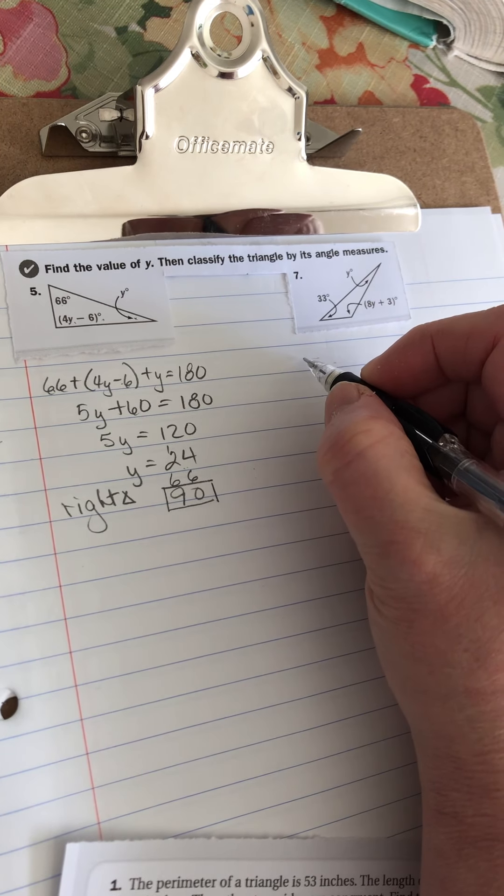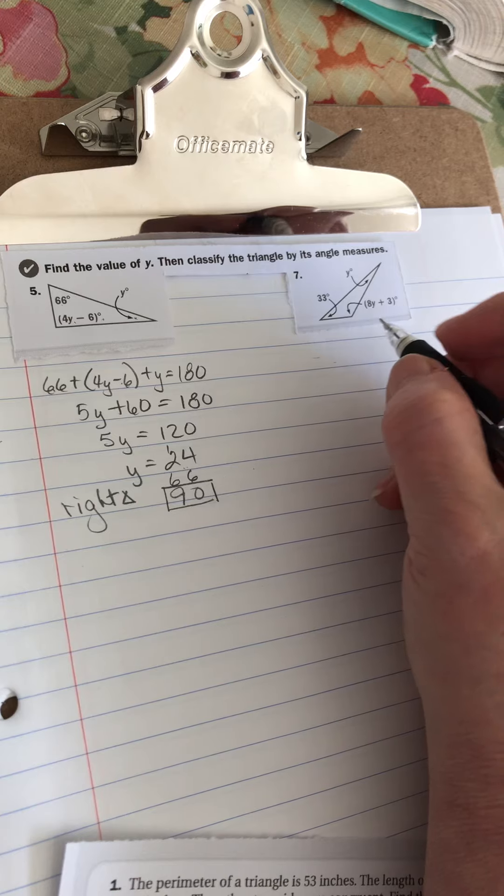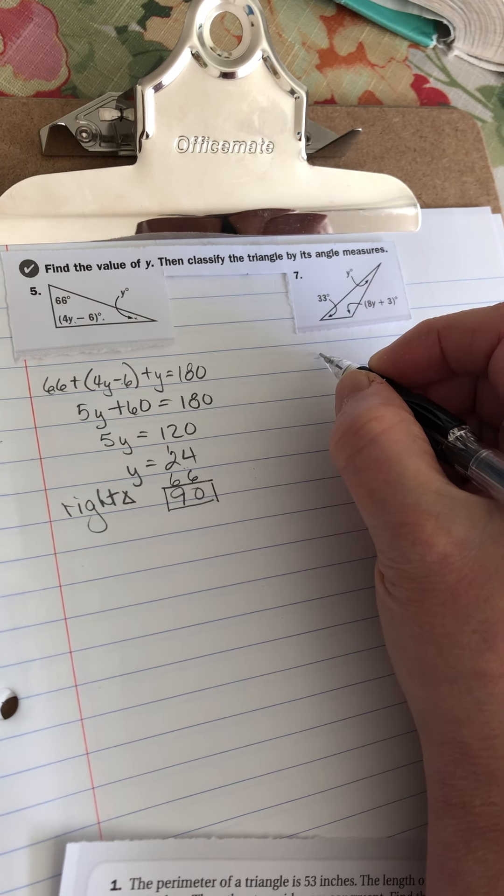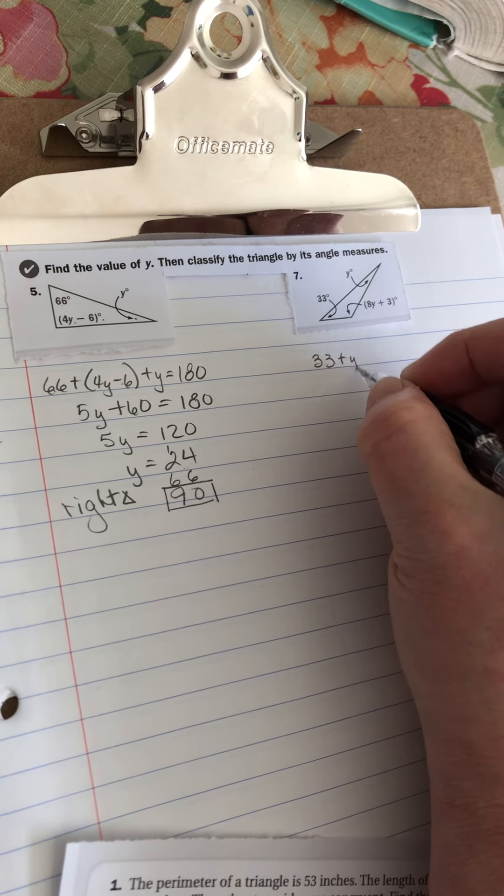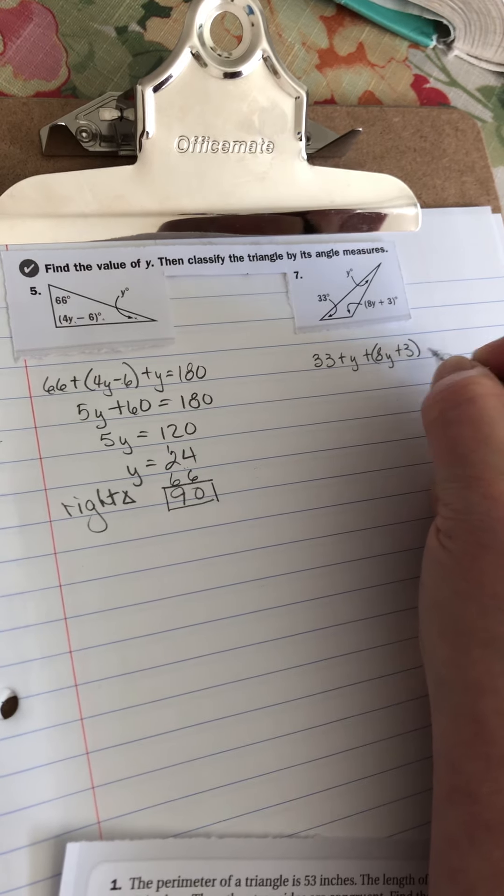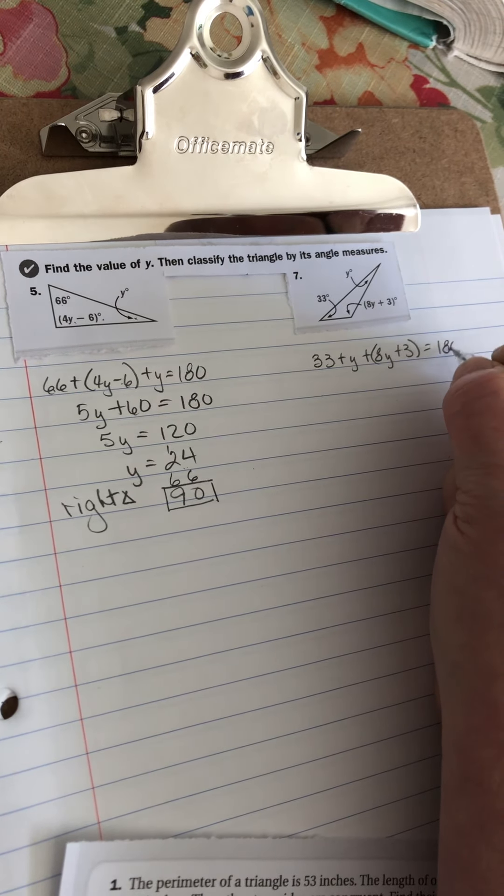Let's look at number 7. And this came out of the chapter review, so it's in your book if you can't see the numbers. But we've got 33 degrees plus y plus 8y plus 3. And that's going to add up to 180 degrees.